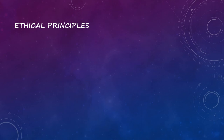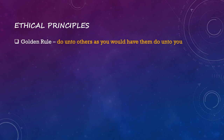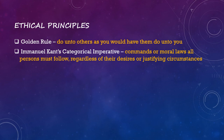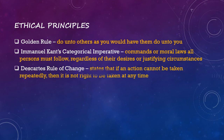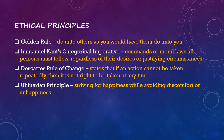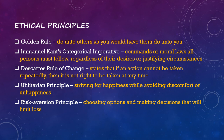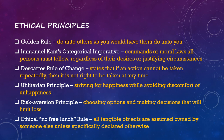For ethical principles: first, the golden rule — do unto others as you would have them do unto you. The categorical imperative — moral laws that all persons must follow, regardless of their desires or justifying circumstances. The Descartes rule of change — if an action cannot be taken repeatedly, then it is not right to be taken at any time. The utilitarian principle — striving for happiness while avoiding discomfort or unhappiness. The risk aversion principle — choosing options that limit loss. And the ethical no free lunch rule — all tangible objects are assumed to be owned by someone unless specifically declared otherwise.